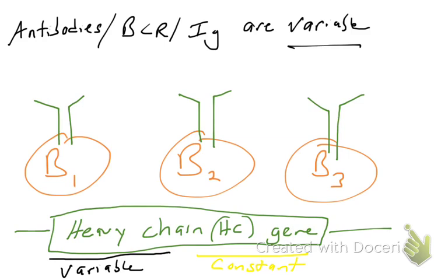What does it mean that immunoglobulins or antibodies are variable? Genes have the instructions of DNA that code for protein. In all of these B cells, the part of the heavy chain gene marked 'constant' makes the same amino acid sequence in all of those proteins. So the heavy chain gene has a constant region, and the amino acids coded for by the constant region are the same in many B cells. But the variable region of the heavy chain gene is different between B cells.